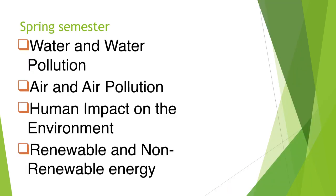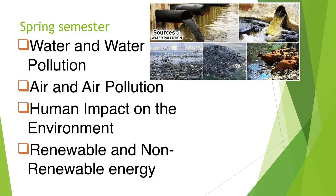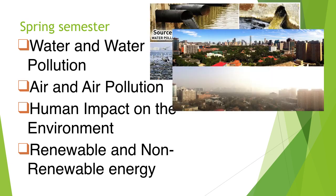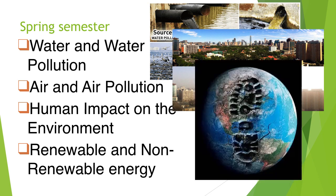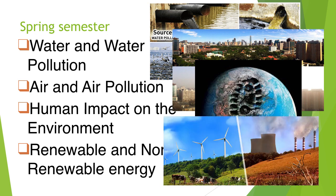Spring semester we start off with water and water pollution, then focus on air and air pollution. We see cities with and without smog, what affects smog, and the different chemicals in the air. We then study the human impact on the environment — if you've ever wondered what a carbon footprint is or how your decisions about what food you eat affects the earth, you'll learn about that in environmental science. We end the year with renewable and non-renewable energy.